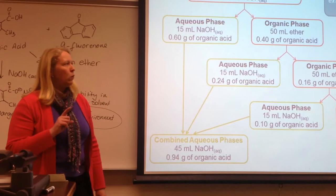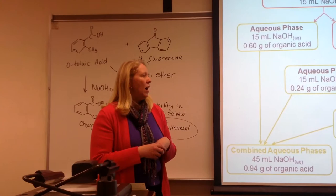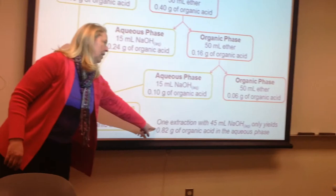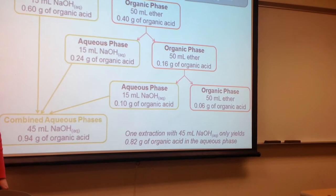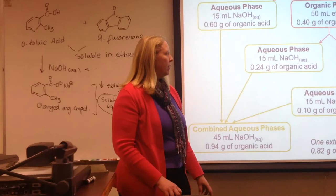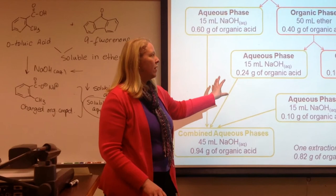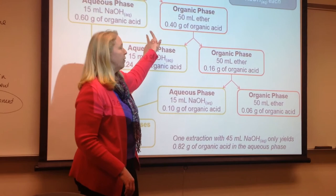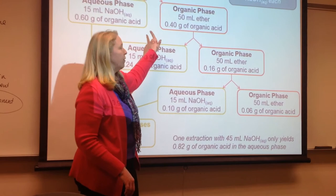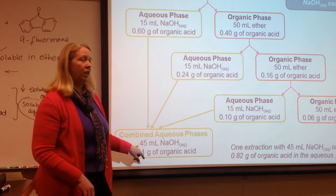If we did only one single extraction at a higher volume, we only get 82% of that organic acid transferred into the aqueous phase — that is not as good. You will do an exercise on this for your pre-lab, going through this calculation using a different example. The amount of volume you use does make a difference. Here we're using 15 mL NaOH per extraction, and in each transfer we only transfer 60%, but overall we use the same total of 45 mL of sodium hydroxide.